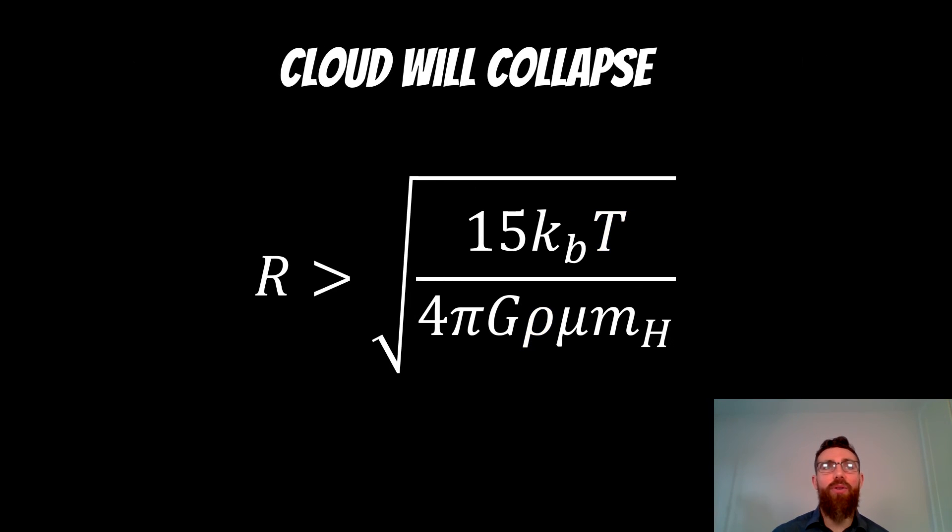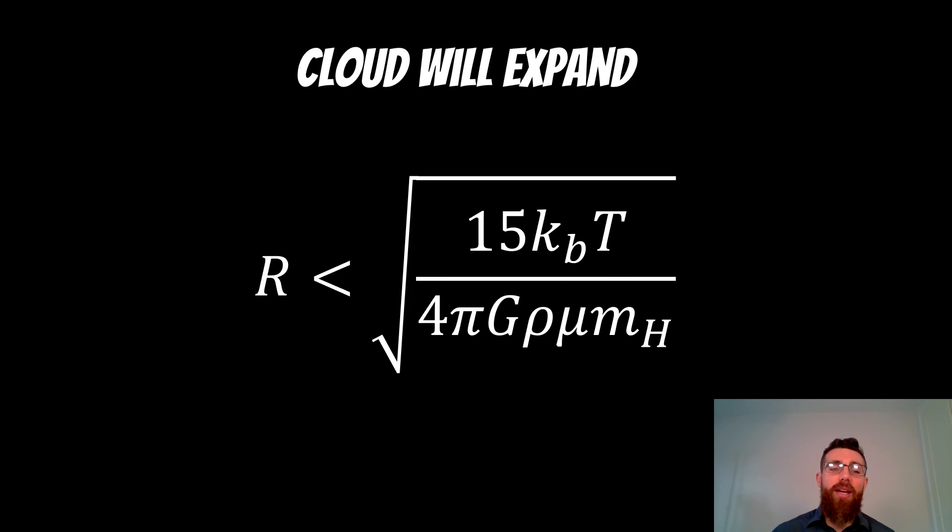If you have a cloud of gas which has a larger radius than this Jeans radius or Jeans length, then the cloud will be unstable and it will collapse. If it's actually the other way around, so the radius of that cloud is less than the Jeans radius, then it's going to actually expand. If it's equal to it, then it will be balancing one another out. This is what you'd be looking for.